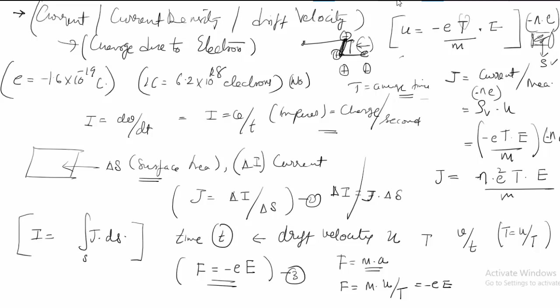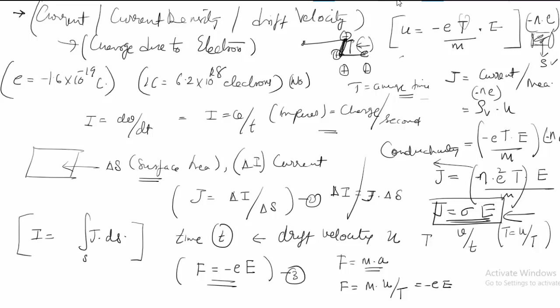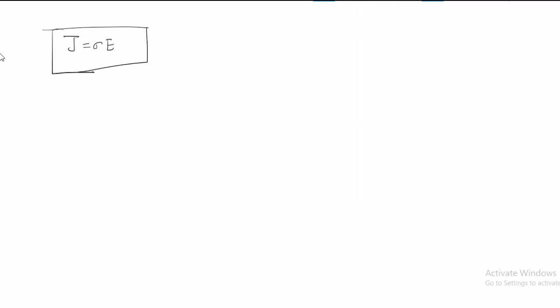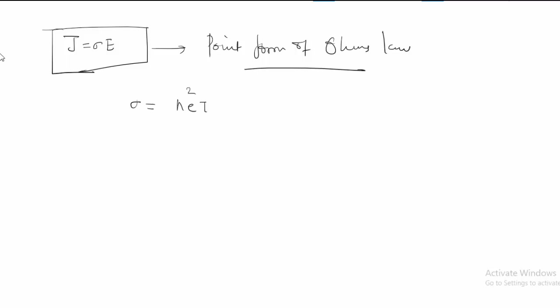This entire term — N e squared tau divided by m — is known as the conductivity sigma. The final equation is J equals sigma times E, which is the equation of current density in terms of the electric field intensity. This derivation of J equals sigma E is known as the point form of Ohm's law, where sigma equals N e squared tau divided by m.